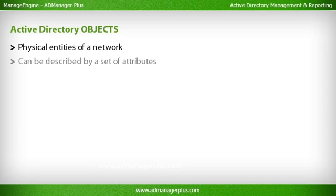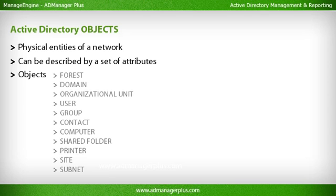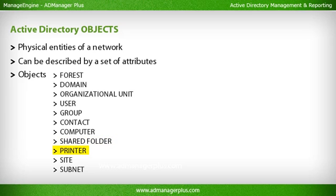Active Directory objects are the physical entities of a network and can be described by a set of attributes. Objects include: forest, domain, organizational unit, user, group, contact, computer, shared folder, printer, site, and subnet.